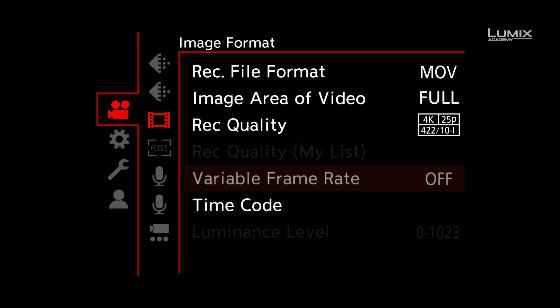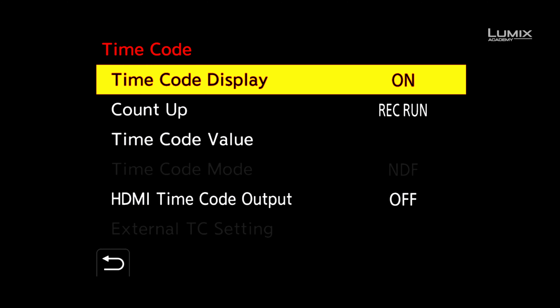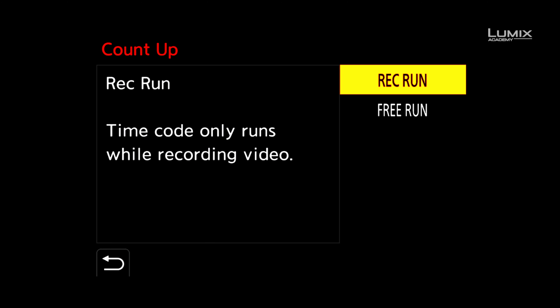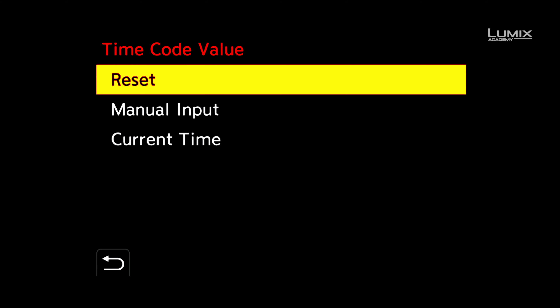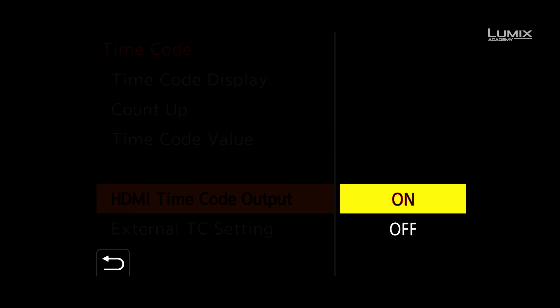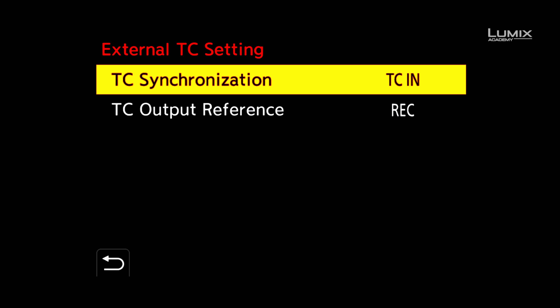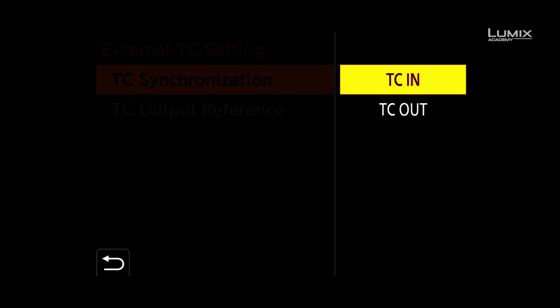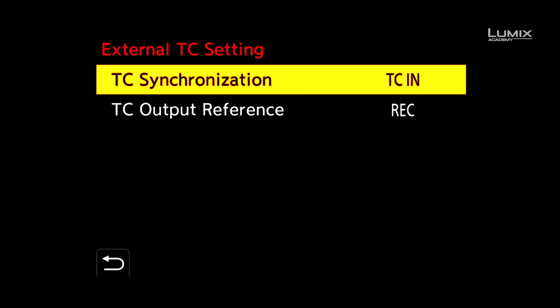The first option allows you to display the timecode on the monitor. The second option gives you the choice of free run or rec run — for this tutorial, we're going to stick with free run. Timecode value allows you to input a custom timecode value if you're using the camera as the master timecode device. HDMI timecode output allows you to pass timecode to external recorders via HDMI. Lastly, the external timecode settings option allows you to choose either timecode in, if you're using an external device like the Tentacle Sync, or timecode out if you're using the camera as the master timecode device.